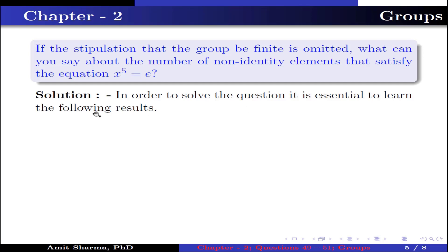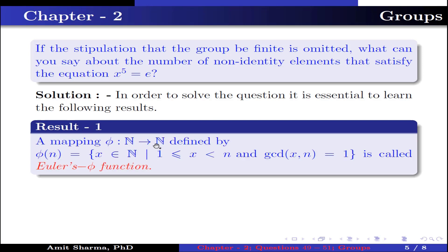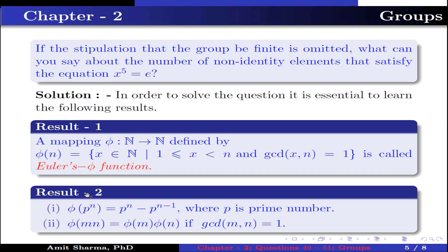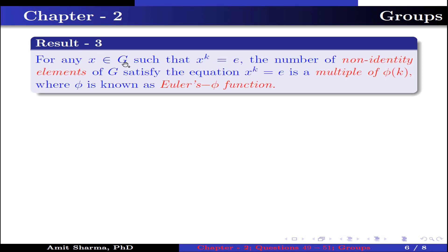In order to solve this question, it is essential to know the following results. Result 1: Euler's phi function φ is defined as φ(n) = |{x ∈ ℕ : 1 ≤ x < n and gcd(x,n)=1}|. Result 2: φ(p^n) = p^n − p^(n−1) where p is a prime number, and φ(mn) = φ(m)·φ(n) if gcd(m,n) = 1. Result 3: For any x in G such that x^k = e, the number of non-identity elements of G satisfying x^k = e is a multiple of φ(k), where φ is Euler's phi function.